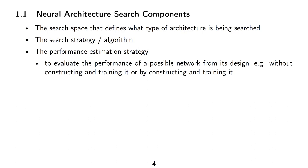There are multiple options for the search strategy or the search algorithm itself — how we are going to explore the options in the search space. For example, we could randomly sample a possible architecture from the search space, train it, do this a thousand times, and then pick the architecture that performs best. In this case, the search strategy would be some form of random search.